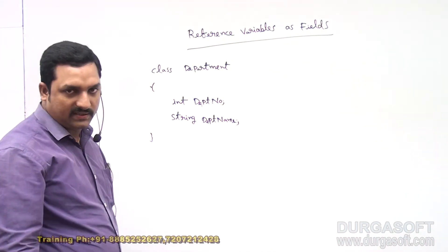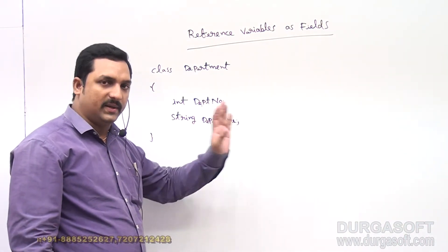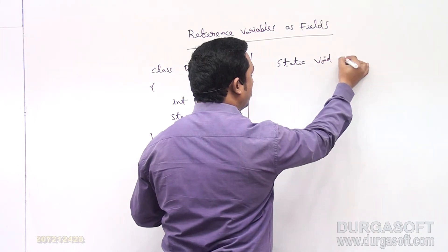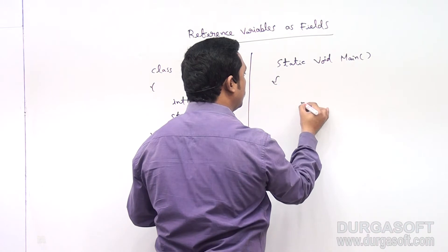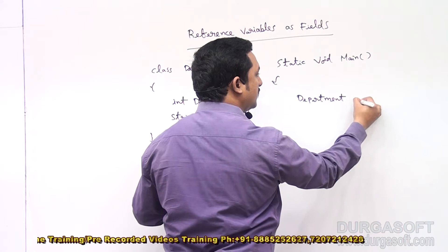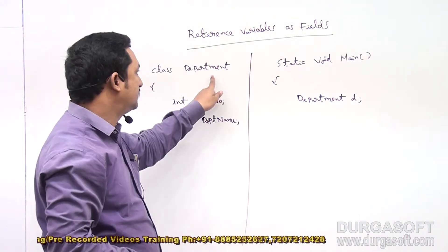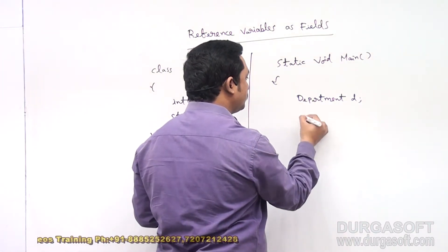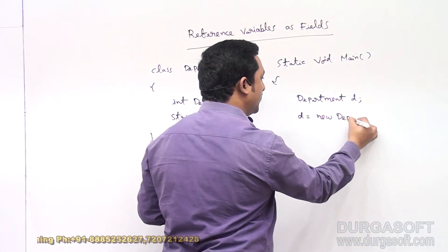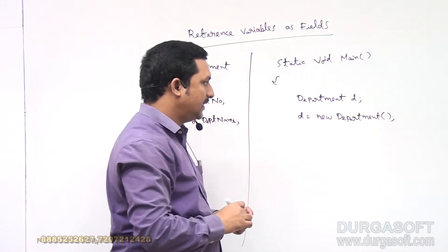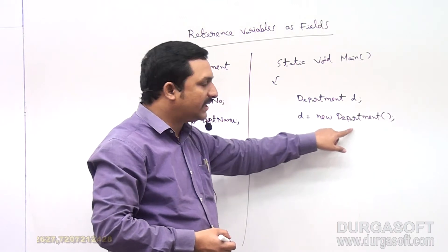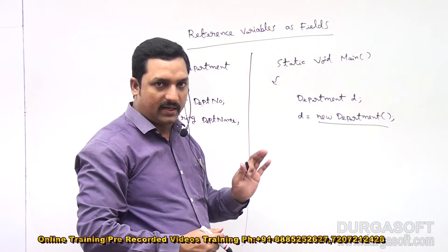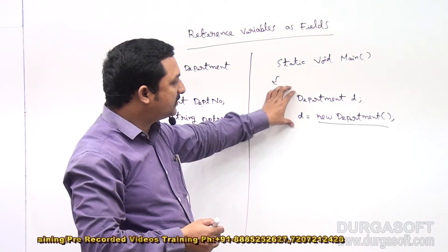Now the class development is completed. Generally we declare the reference variable inside the main method. So we go to static void main and write: Department D. Here Department is a class which is already created, and for that class I am creating a reference variable D. Then D = new Department — we are creating an object for the Department class and storing its address into the variable D.